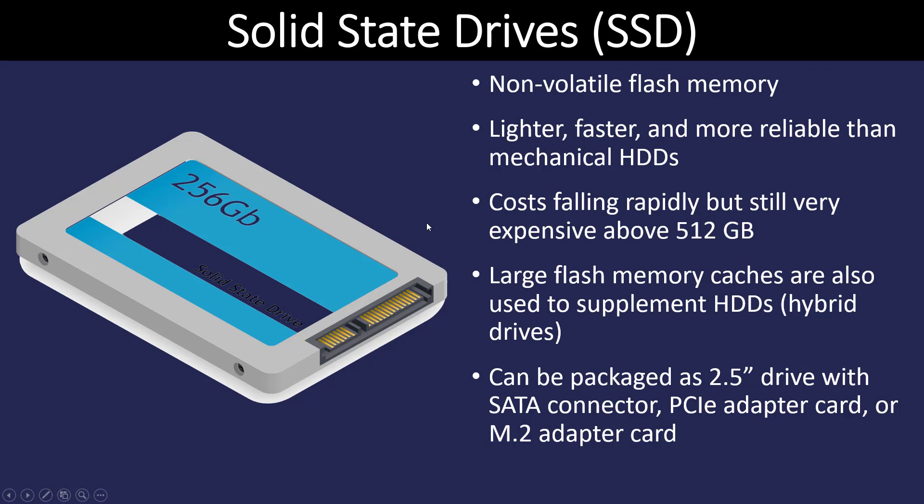Solid state drives, on the other hand, have no moving parts. They're technically non-volatile flash memory. They're lighter, faster, and likely more reliable than a hard disk drive as they don't have any moving parts. However, they're considerably more expensive, especially when you get into very large drives. There's also a type of drive called a hybrid drive, which uses a spinning hard drive and a large flash memory cache to speed up the transfer rate. Although those aren't nearly as popular now as before — likely you're going to have just a hard drive or a solid state drive as an option.